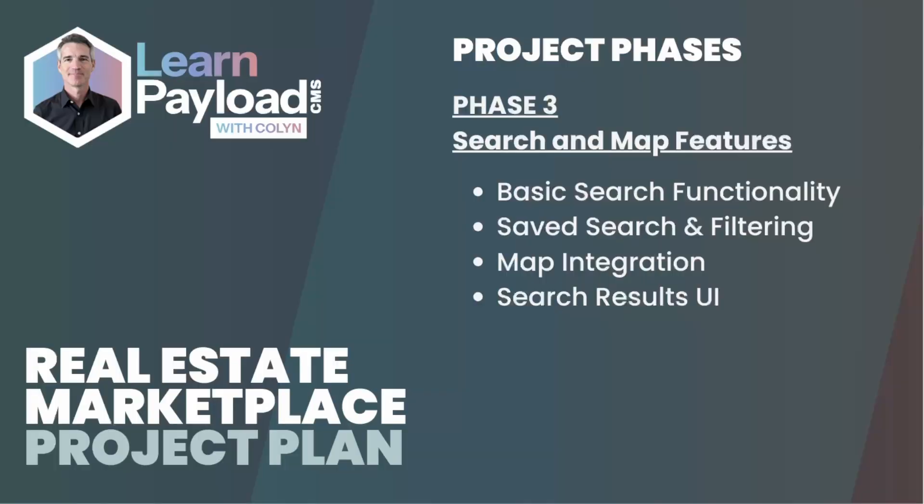Phase three is search and map features. We're going to have a list view and a large map view. In the list view, we're going to get into infinite scroll features as well as property card components. Users who are logged in should be able to save a search and filter on all their preferences — within price range, location, and property type.